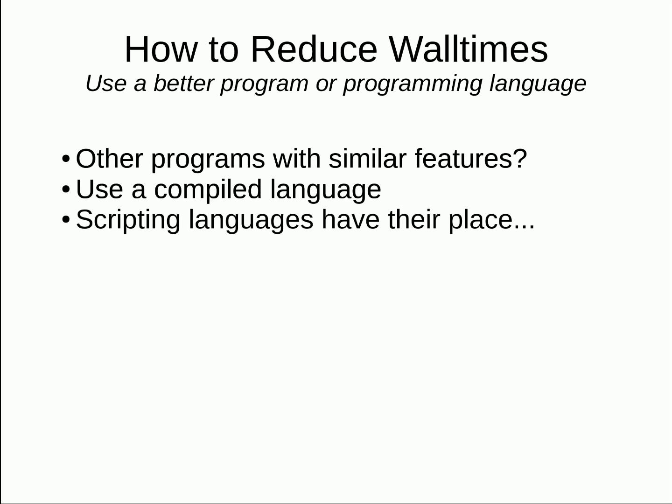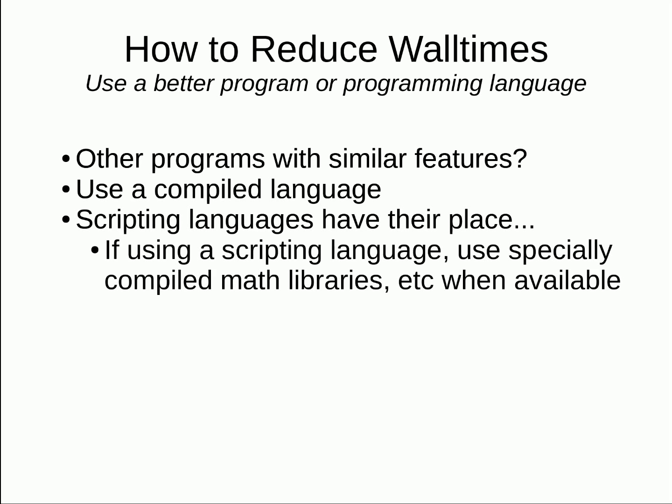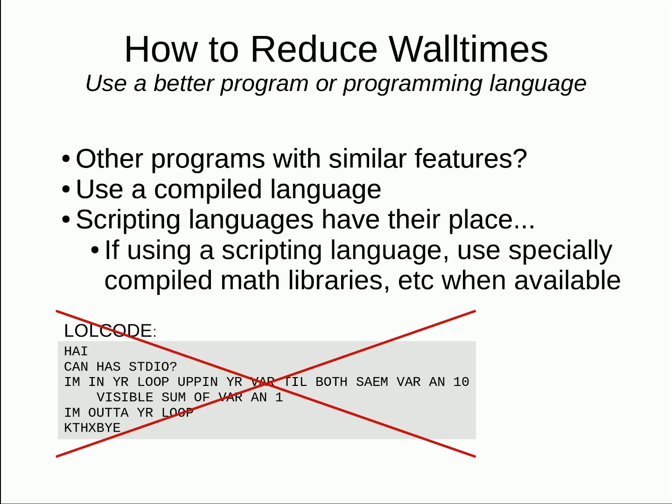Scripting languages have their place, but it's usually not in running high-performance code. If you choose to use them anyway, some scripting languages have specially compiled libraries, such as math libraries, that were written as highly optimized C code and then made available as optional modules that you can import. And please, if you use a scripting language, use one that doesn't have a poor reputation for performance, such as Ruby or lolcode. I'm not trying to start a language holy war, so I'll let you think of other examples.